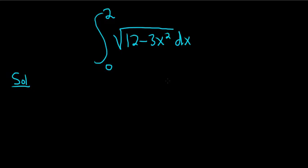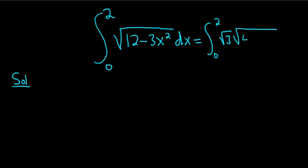So this looks like a really hard integral, but I think we can write it in a convenient way. Let's think about what this function is. First of all, we can pull out a 3. So you can write this as the square root of 3 times the square root of 4 — because 4 times 3 is 12 — minus x squared dx.